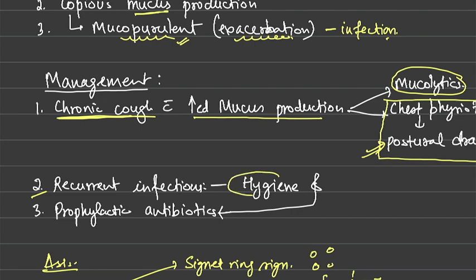To manage recurrent infections, maintain proper hygiene, give the patient a mask, avoid crowded places, and avoid visiting hospitals unless necessary. Prophylactic antibiotics can be given to prevent infections. The most commonly implicated organisms are Pseudomonas — for which we give Piptaz — and Staphylococcus and Streptococcus, for which we can give amoxicillin.